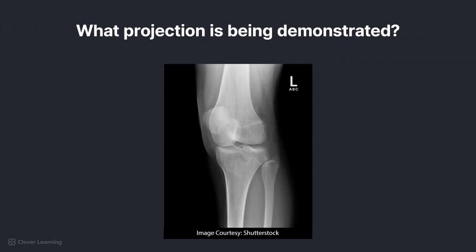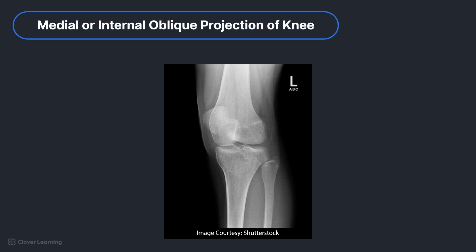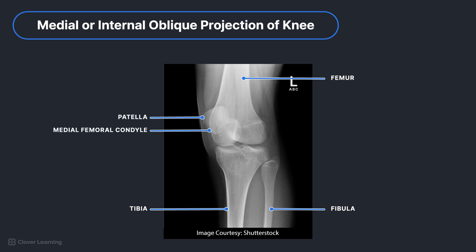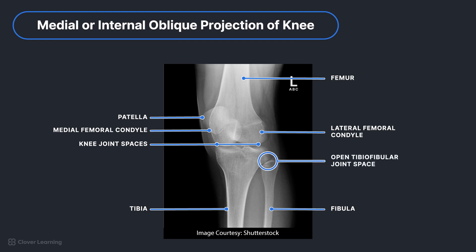Which oblique projection of the knee is being demonstrated in this radiograph? How do you know? This is a medial or internal oblique projection of the knee. For this projection, the distal femur and proximal tibia and fibula should again be visible, along with the patella superimposing the medial femoral condyle. The lateral condyles of the femur and tibia should be well demonstrated, and the medial and lateral knee joint spaces will appear unequal. One main distinguishing feature of the medial oblique is the open proximal tibiofibular joint space.